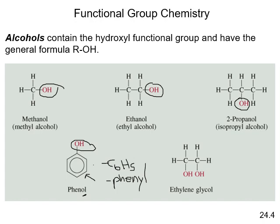If the alcohol is on carbon one, it would be 1-propanol. Ethylene glycol is a common name for a compound that has more than one OH group on its carbon backbone — a 'glycol.' Its IUPAC name is ethane-1,2-diol.